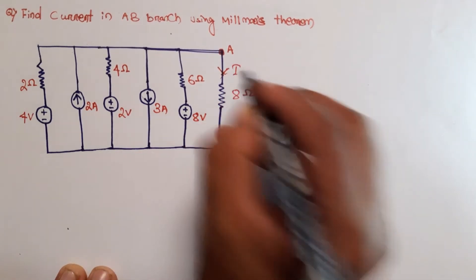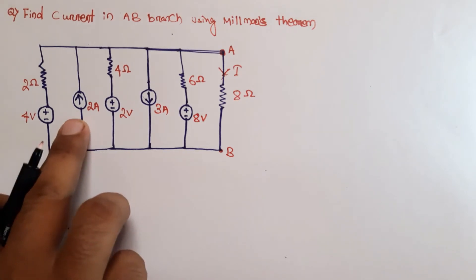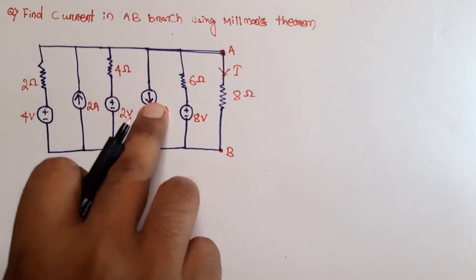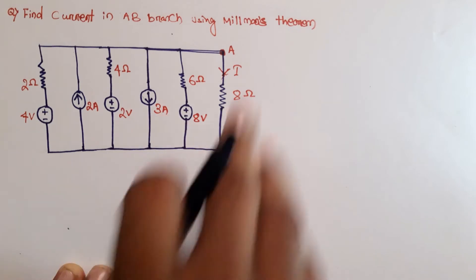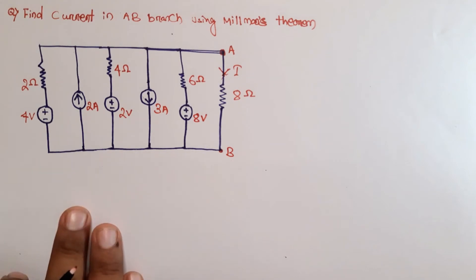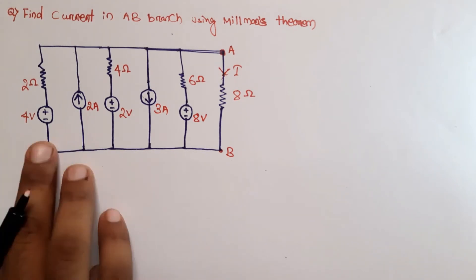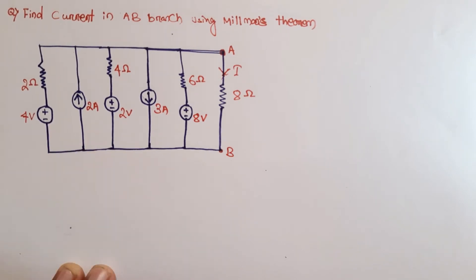According to Millman's theorem, when voltage sources with their internal resistance are connected in parallel, they can be converted into a single voltage source with a series resistance. In some cases, if current sources are connected in parallel, they can also be converted into a single voltage source with series resistance. Here we have a mix of voltage sources and current sources, unlike our previous question which had only voltage sources.